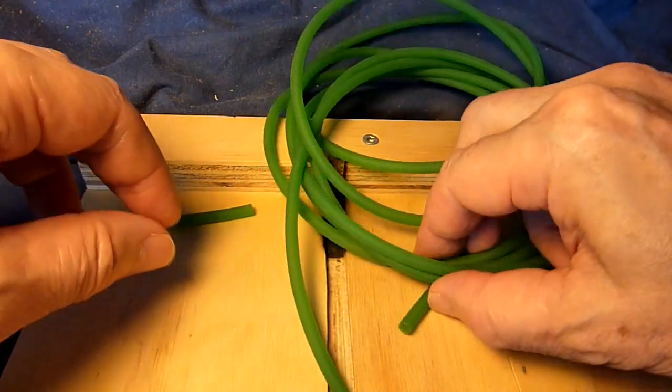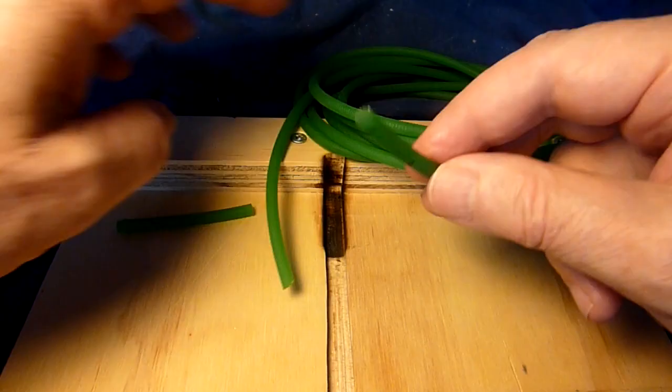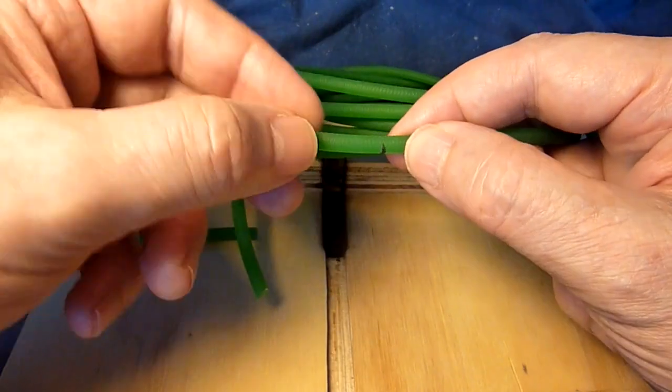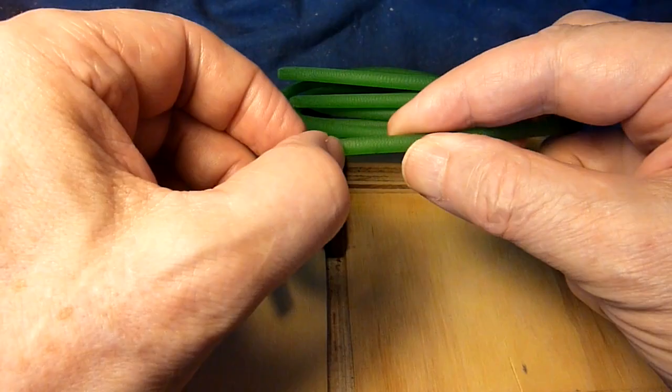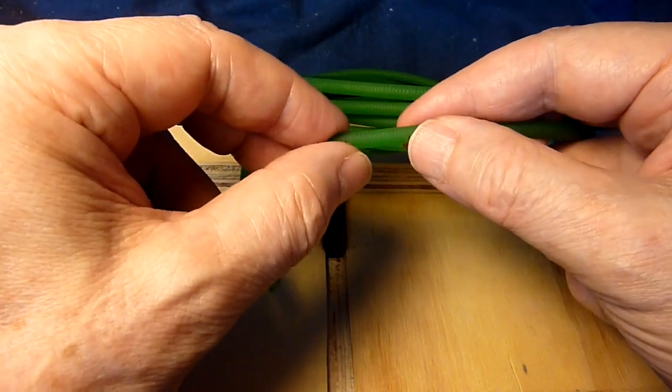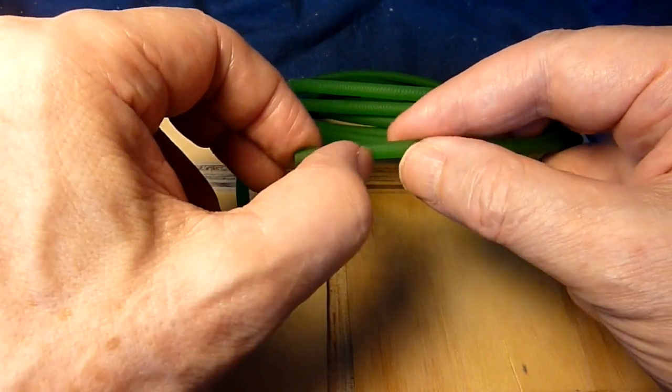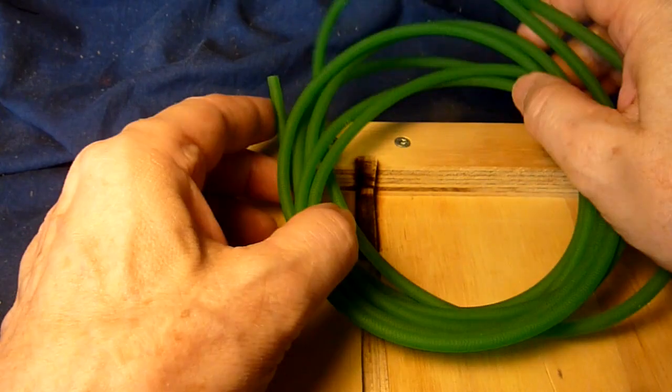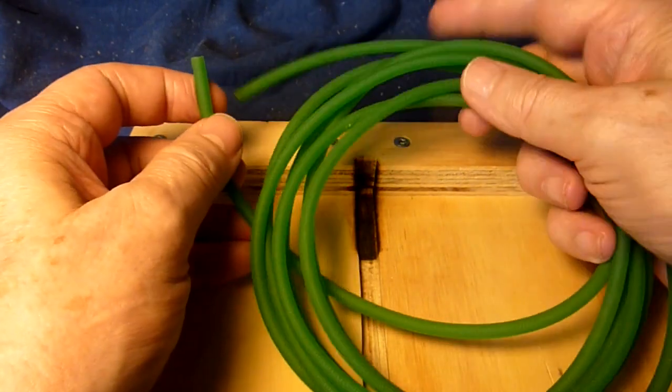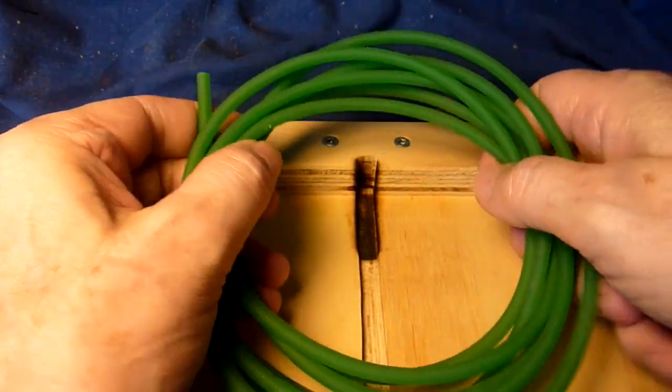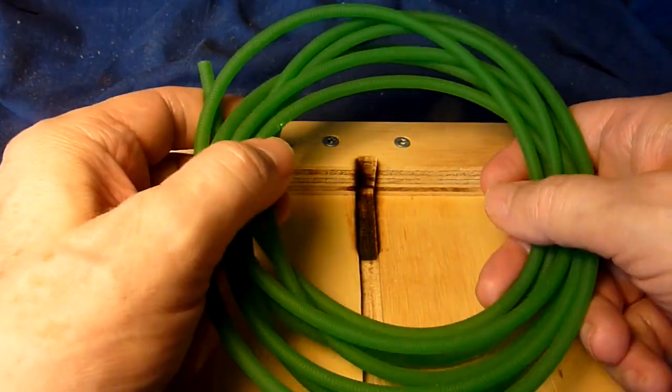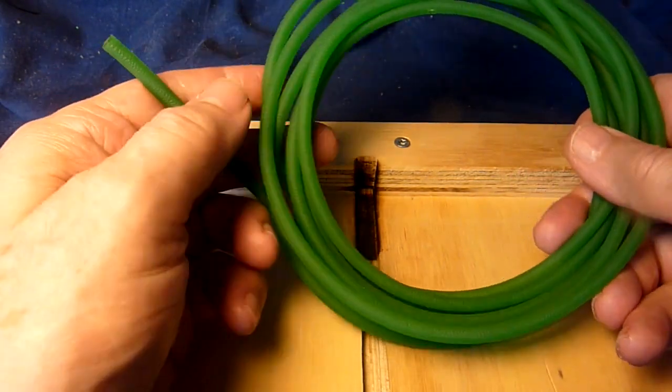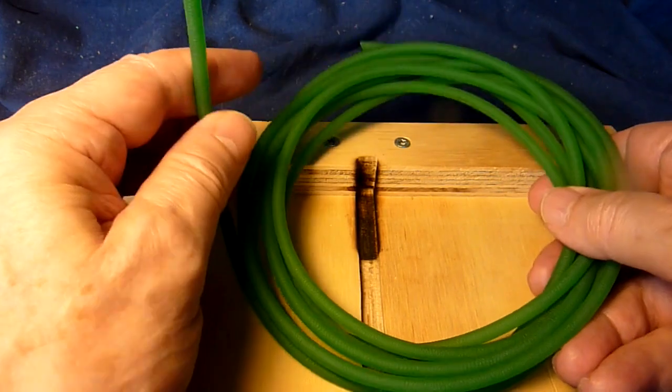This is the PU belt material I got. It's five millimeters in diameter and has a rough surface so it will get better friction to the surfaces of the pulleys. I got three meters of this material and paid about 1.5 euros for it. So it's quite easy and quite cheap to make belts with this material.